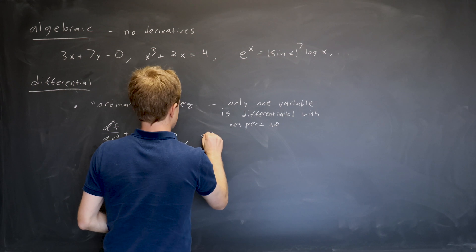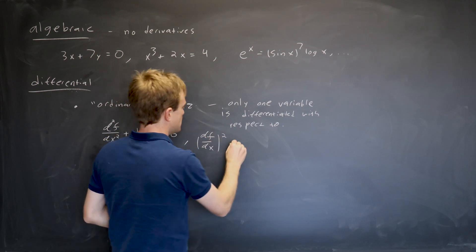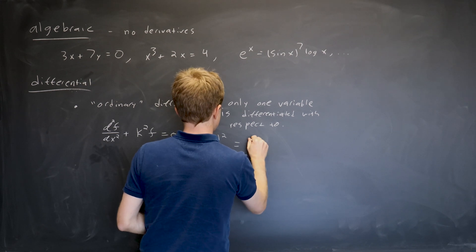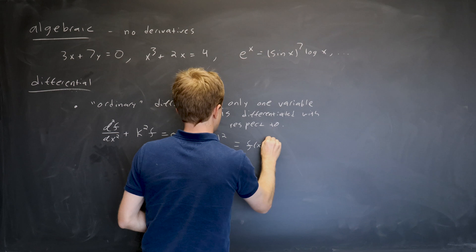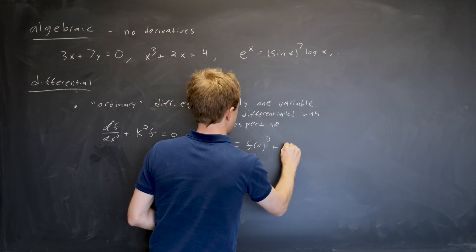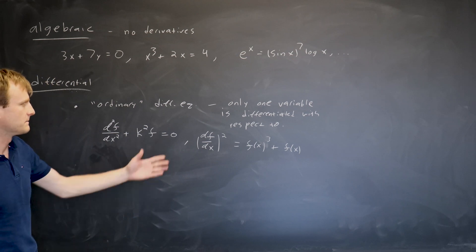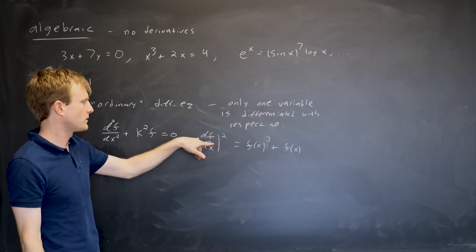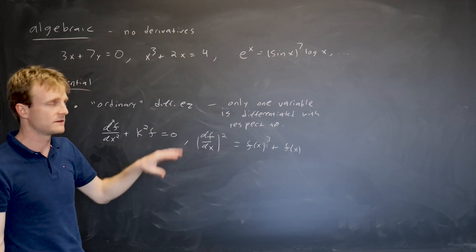So, for example, you could have df/dx squared equals, I don't know, some function f of x cubed plus f of x. It doesn't matter what it is. It's just a made-up equation. The point is you have f cubed, you have df/dx squared, so it's not linear.